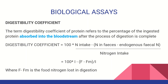The end products include urea, ammonia, and nitrogen. In these end products, we estimate nitrogen. So the formula is: nitrogen intake minus fecal nitrogen, where nitrogen intake represents protein intake.